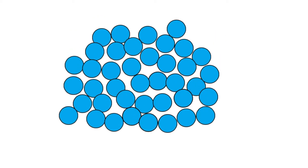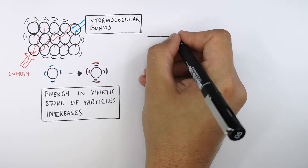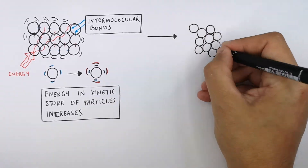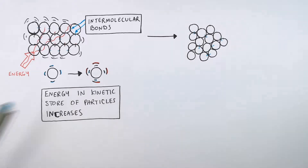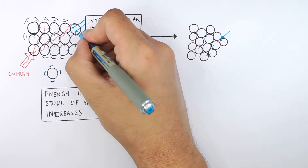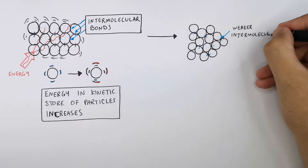This will cause the forces of attraction between the particles to become weaker because the particles are vibrating more, causing some of the intermolecular bonds to be weaker than in a solid. Because the particles are now moving faster, the forces of attraction between the particles become weaker, causing some of the intermolecular bonds to break.